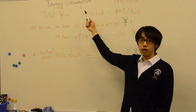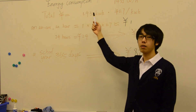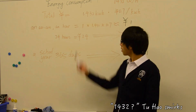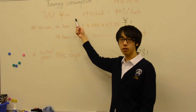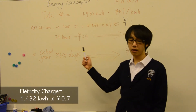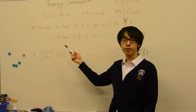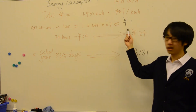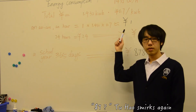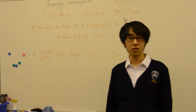This is the average consumption that each air conditioner in our school consumes in an hour: 1,432 watts. Then we have a formula for how much money we pay for it. From this formula, we calculated that an air conditioner running for an hour costs only one Chinese yuan. But the air conditioner that you saw in the video didn't only run for an hour.